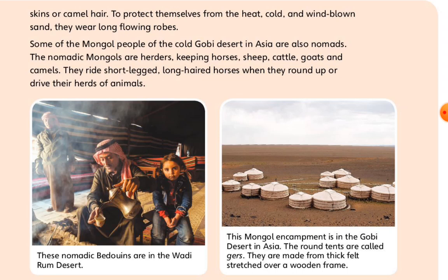Some of the Mongol people of the cold Gobi Desert in Asia are also nomads. The nomadic Mongols are herders, keeping horses, sheep, cattle, goats, and camels. They ride short-legged, long-haired horses when they round up or drive the herds of animals.